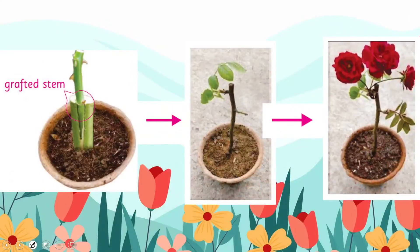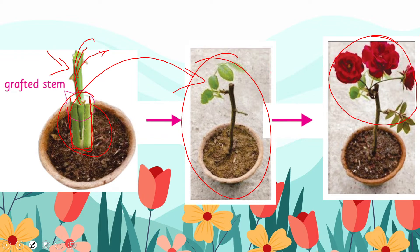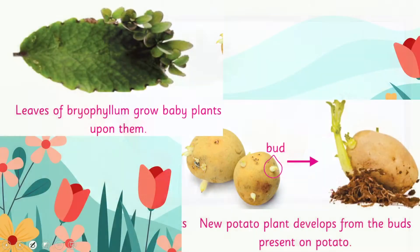Here is the picture of grafting. We took one stem and inside it attached a second stem. After some time it will start growing into a new rose plant and will ultimately have flowers on it. We took one stem, attached another stem inside it — grafted it — and after some time leaves will start emerging from the new stem, and after those leaves, flowering will also start. Leaves of Bryophyllum grow baby plants upon them.